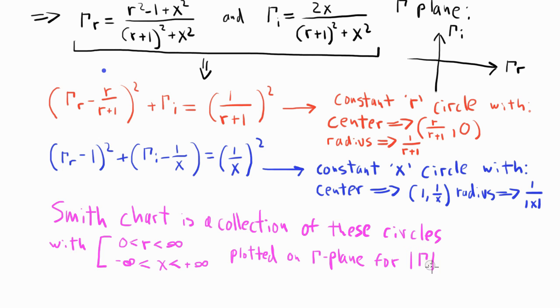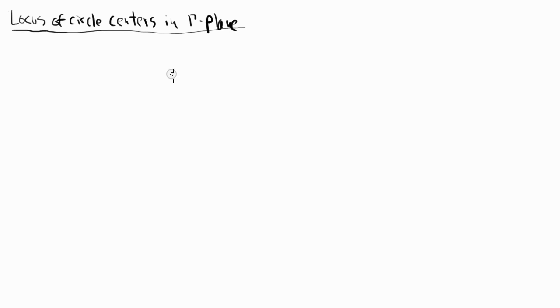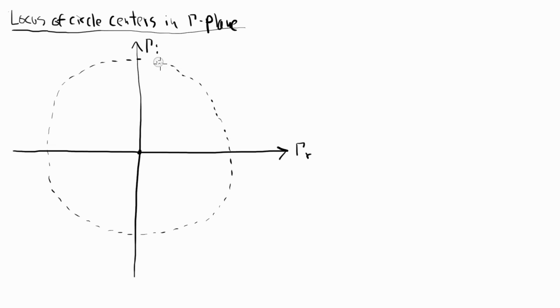Since x is the imaginary part of normalized impedance it can be negative or positive j. Note that the magnitude of gamma must be less than or equal to one, so only points on these circles satisfying this condition are part of the Smith chart. Now let's draw the locus of circle centers in the gamma plane. Here's our gamma plane, and let me draw a circle with a radius of one — all Smith chart points must be contained within this circle.